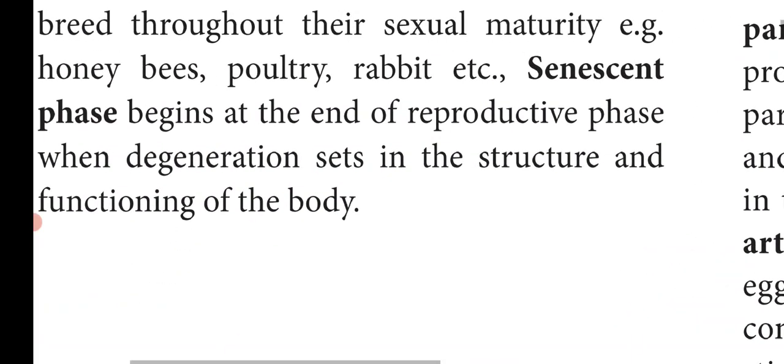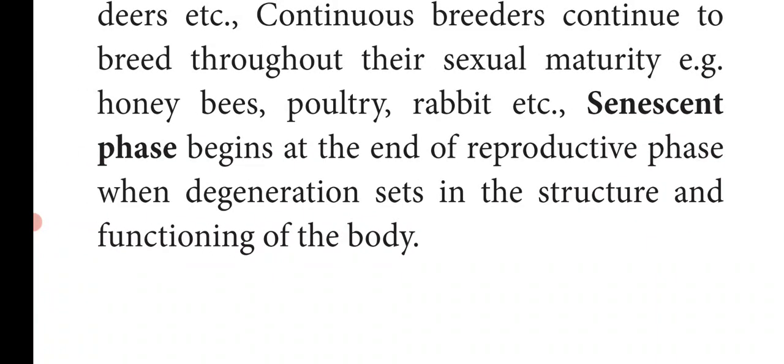The last phase is called the senescent phase. This phase begins at the end of the reproductive phase when degeneration sets in the structure and functioning of the body. The senescent phase is the final phase, otherwise called the death phase. It is also called the aging phase because the aging process starts in organisms.